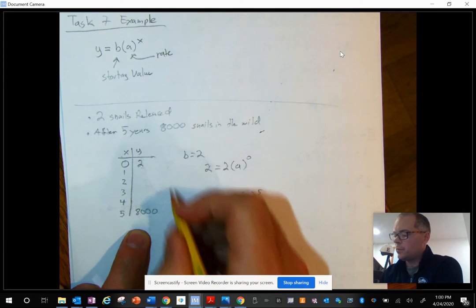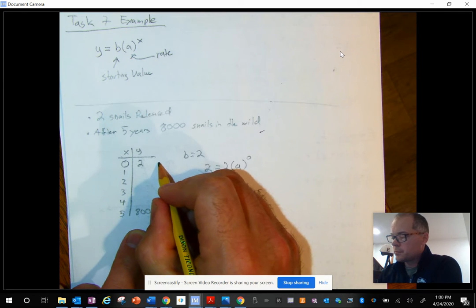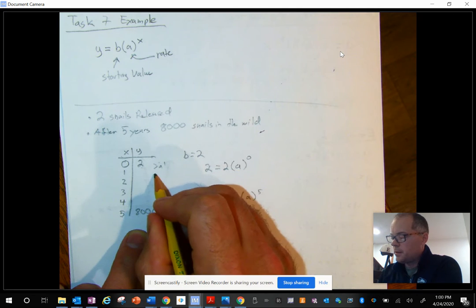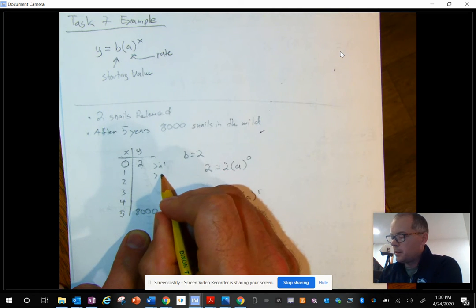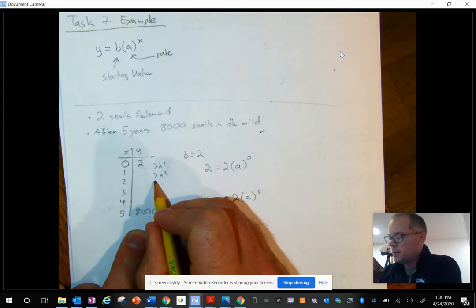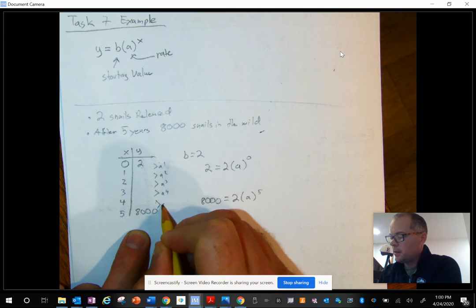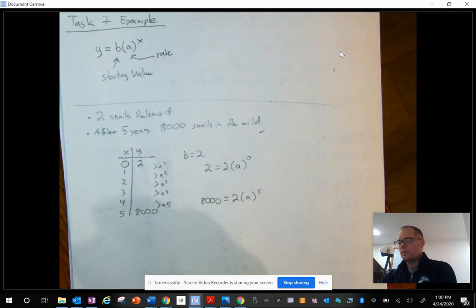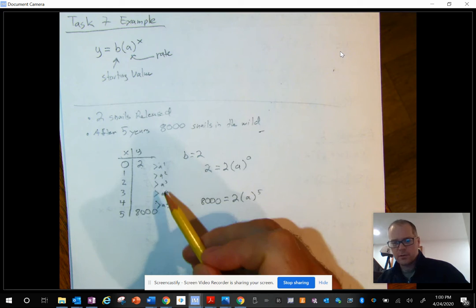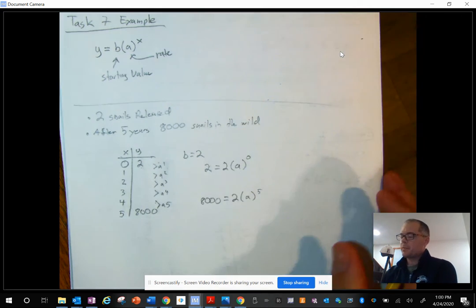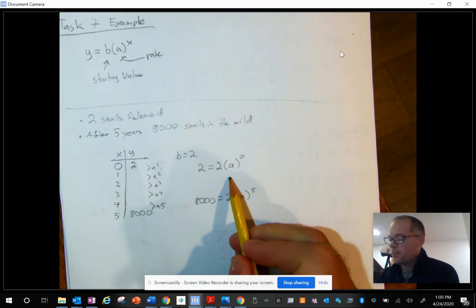So to get from here to here, this was A to the first power, A to the second power, A to the third power, A to the fourth power, and finally, A to the fifth power. So we're basically just multiplying by A over and over and over again. That's the rate. That's how this increases. But we need to figure out what that rate is.